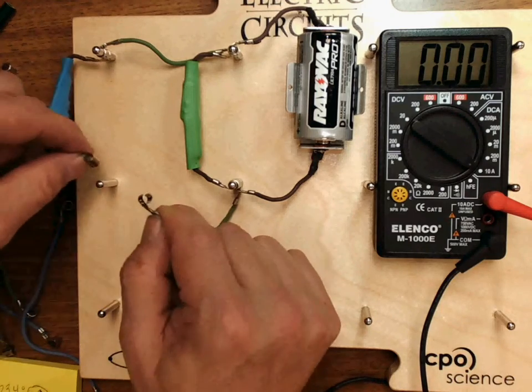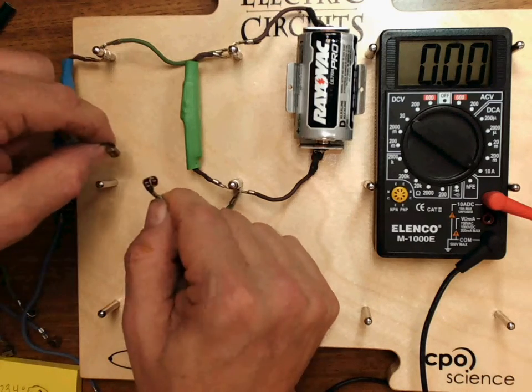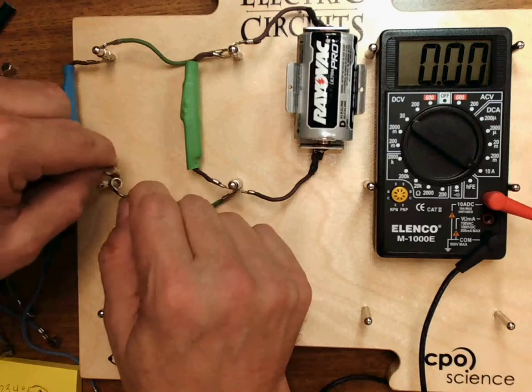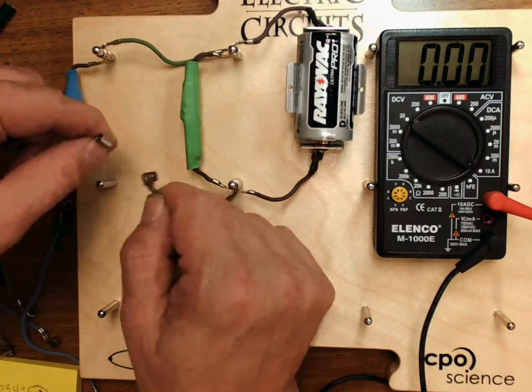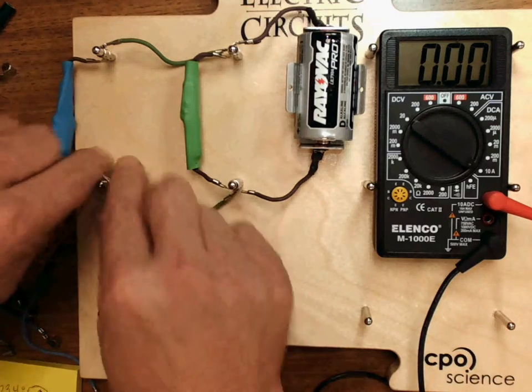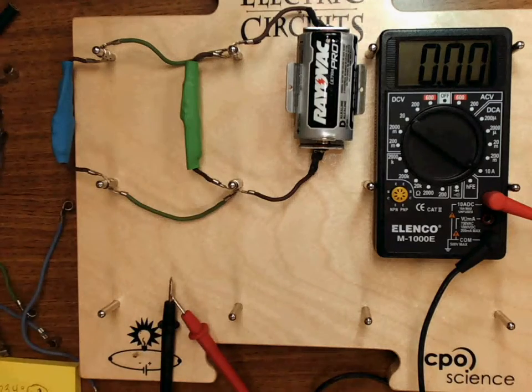They must be unhooked and you must complete the circuit not by connecting them together but by connecting them through the meter. Then I open the circuit here to get the current.